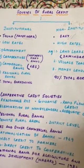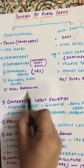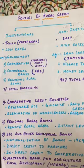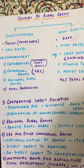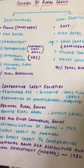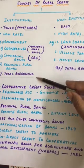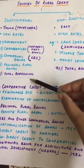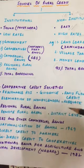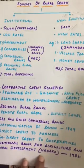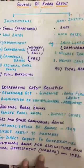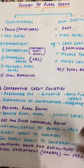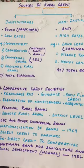During the first Five Year Plan, borrowings from institutional sources were about seven percent of total borrowings, because people still relied more on non-institutional sources due to easy availability. Over time, institutional borrowings increased significantly, and they now stand at 66 percent of total borrowings — growing from just seven percent to 66 percent.